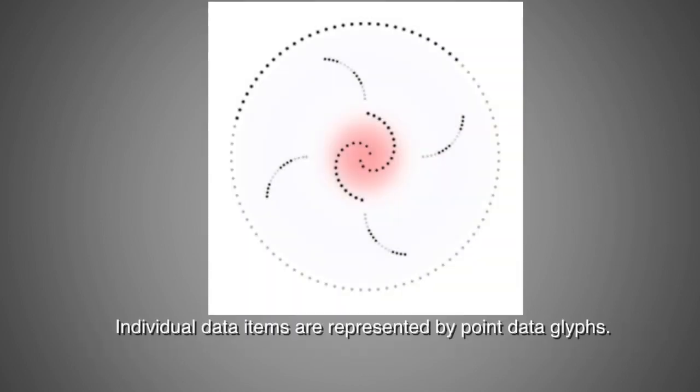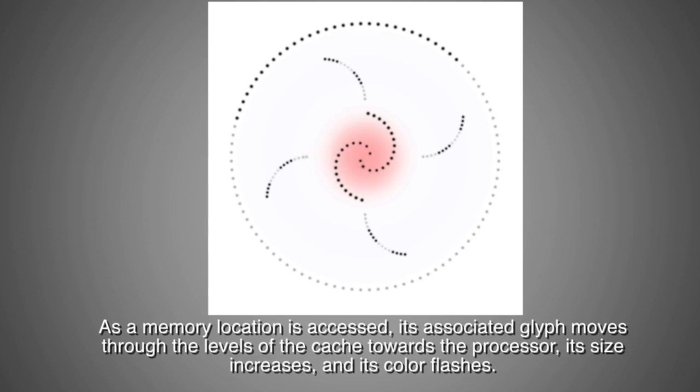Individual data items are represented by point data glyphs. As a memory location is accessed, its associated glyph moves through the levels of the cache towards the processor. Its size increases and its color flashes.